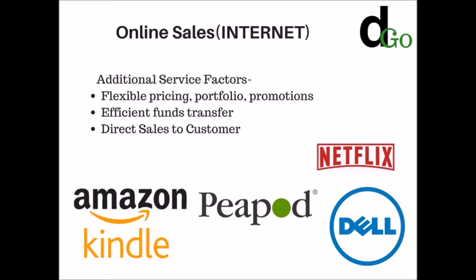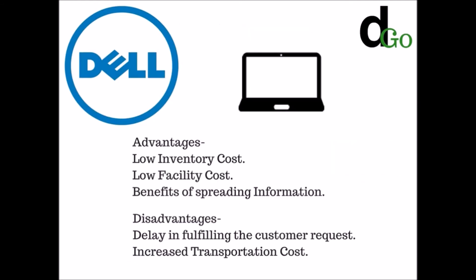We will now discuss case studies of Amazon, Peapod, Netflix, and Dell. For Dell, the advantages of their online system are very low storage requirements, making inventory costs very low. Facility costs are also very low, and they can spread information broadly through their online platform. However, the disadvantage is an increase in transportation cost and delays in fulfilling customer requests, since customers must wait for shipment rather than buying directly from a hardware store.